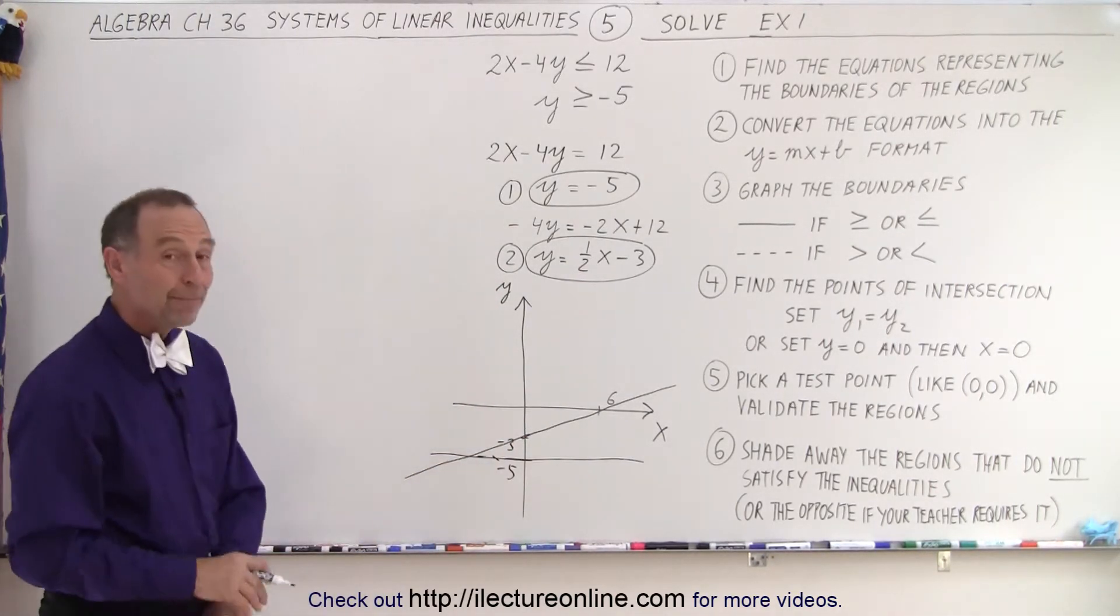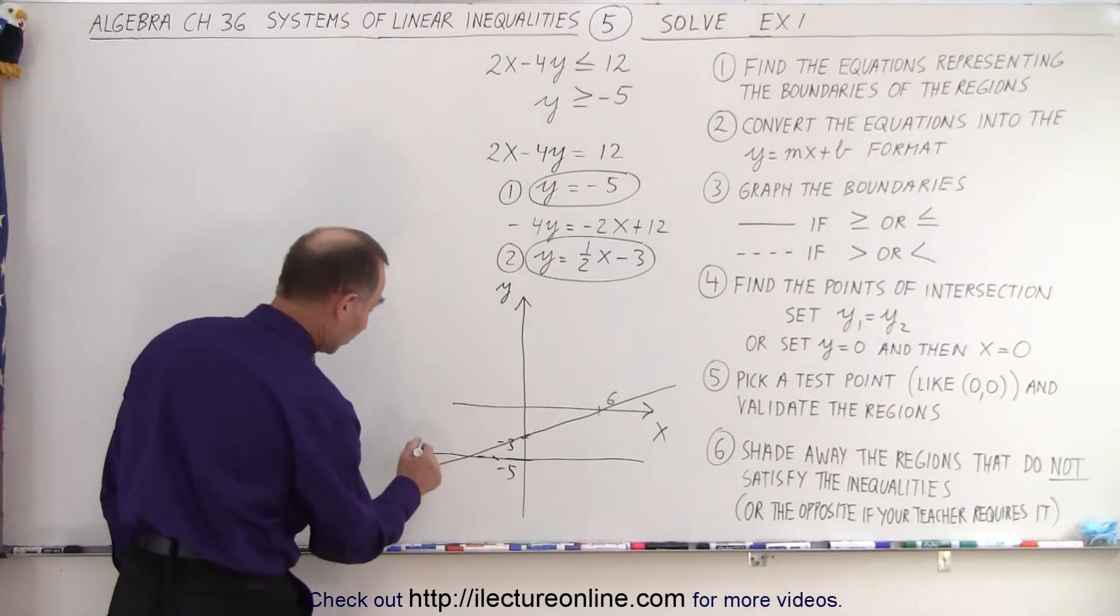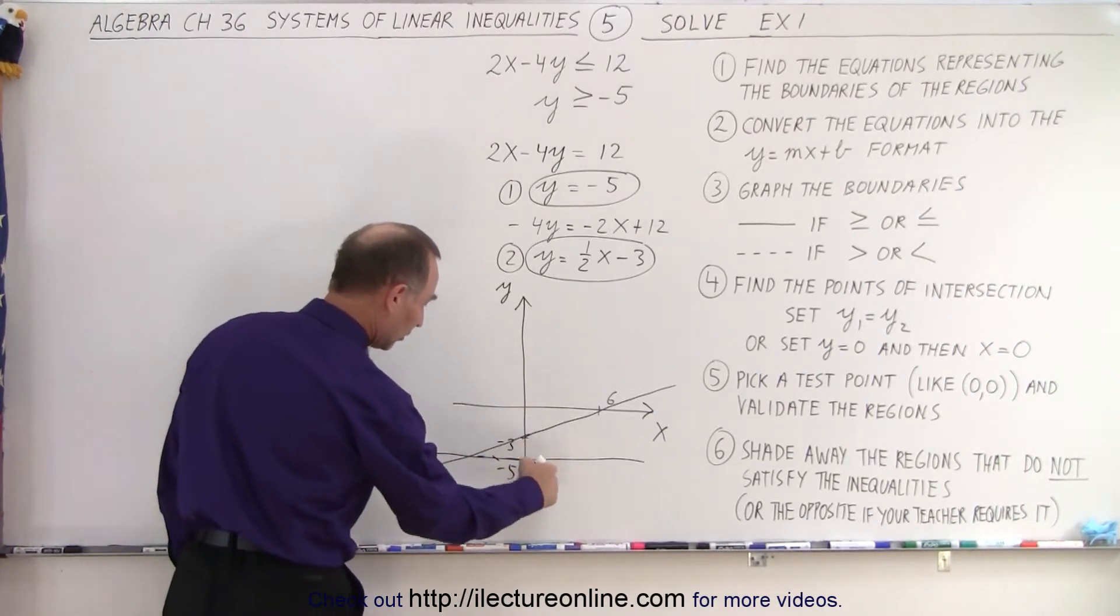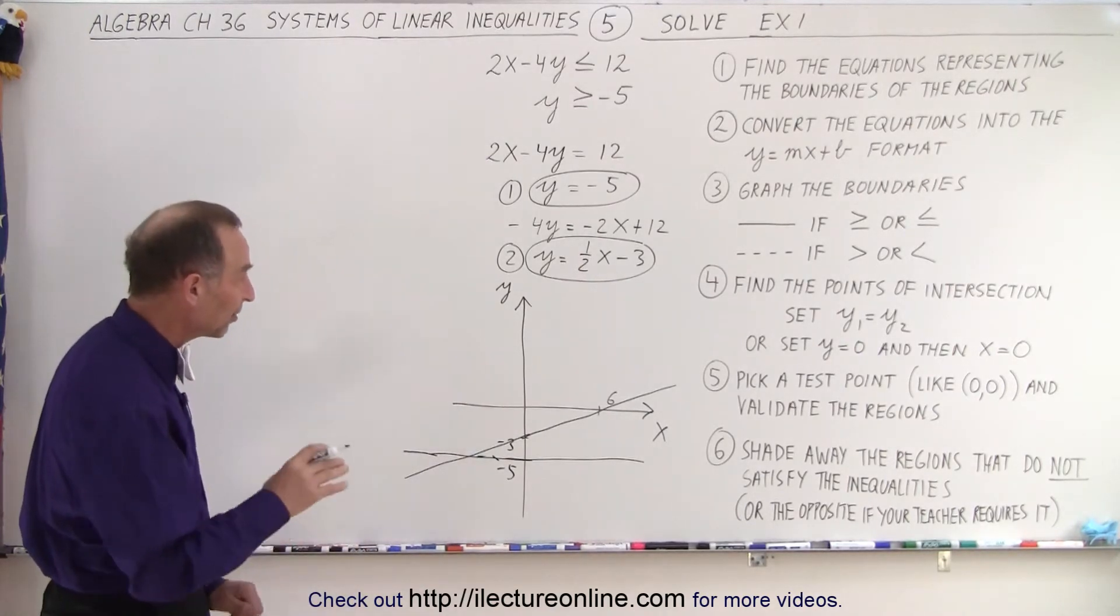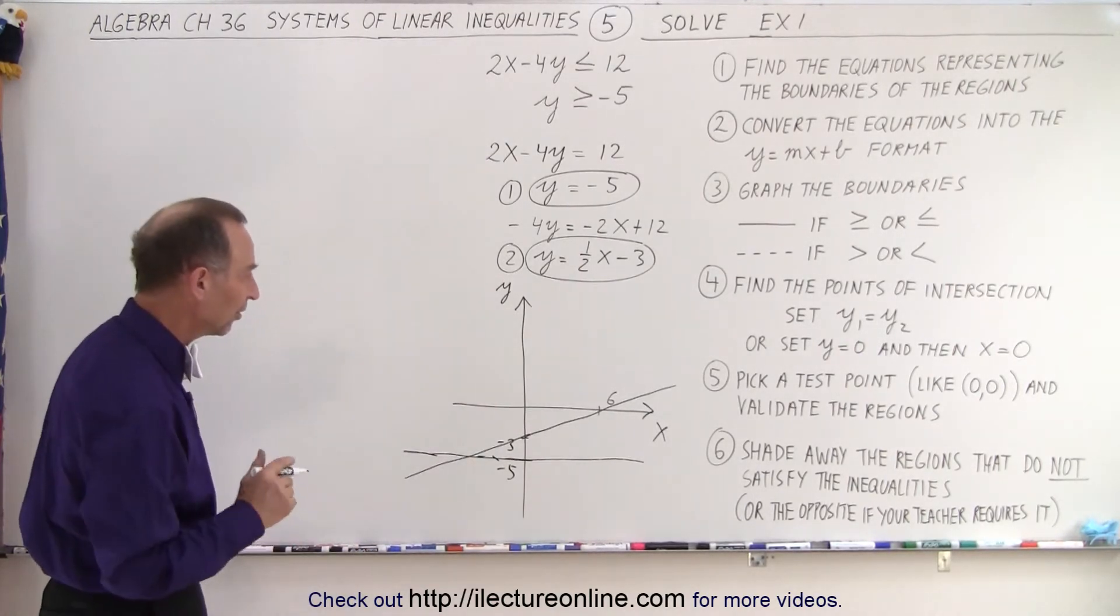Okay. So we have a bunch of regions now. Look, we have a region over here. We have a region here, a region there, and a region there. We have four regions. Only one of those four regions will probably satisfy both those inequalities at the same time.